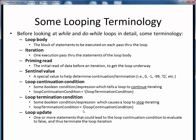We'll see examples of going back and forth between these in some coming lecture materials. Finally, the loop update is any statement or set of statements that might modify the loop's data in such a way that could cause the loop continuation condition to evaluate to false on the next iteration, and thereby cause termination of the looping.